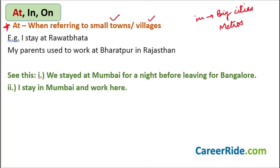'I stay at Ravadbhata' — Ravadbhata is a small town in Rajasthan, so 'I stay at Ravadbhata.' But if it was Mumbai, I would say 'I stay in Mumbai' because Mumbai is a metro. 'My parents used to work at Bharatpur in Rajasthan.' Rajasthan is a big state so I'm using 'in' before it, but Bharatpur is a small place so 'at Bharatpur.' But if they were working in Mumbai, I would say 'in Mumbai.'